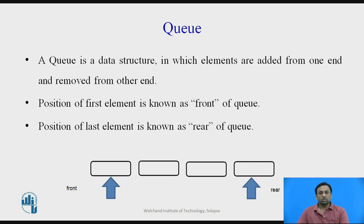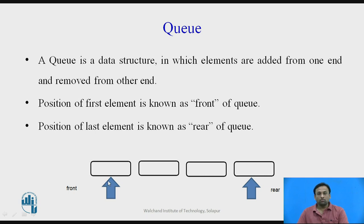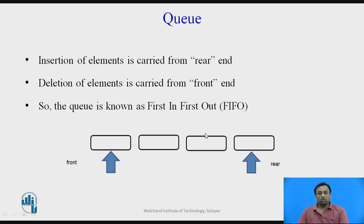The queue is the data structure where elements are added from one end and removed from the other end. The first element in the queue is known as the front, and the position of the last element is known as the rear. Suppose this is an array of size 4, that is a[0], a[1], a[2], and a[3]. The front will be pointing towards the first element in the queue and rear will always point to the last element.